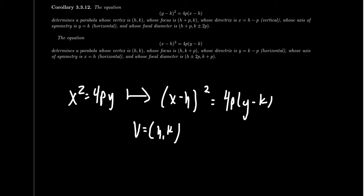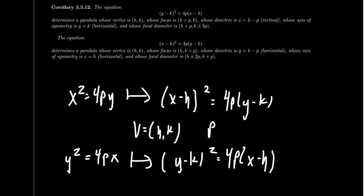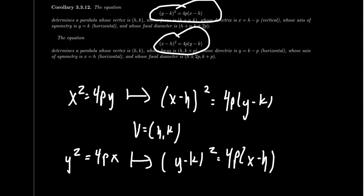If we want to shift a vertical parabola, the same basic idea applies. For a horizontal parabola, take y² = 4Px and shift it so you get (y − k)² = 4P(x − h). Then the vertex of this parabola would be (h, k). If you know the P value, which you can factor out the 4 to find, you can then locate the focus, the directrix, and the focal diameter from this information. This gives us the general formula of a parabola, whether it's horizontal or vertical.